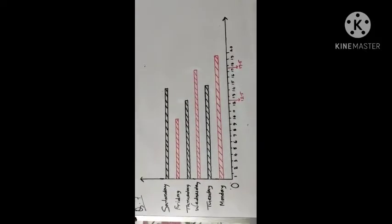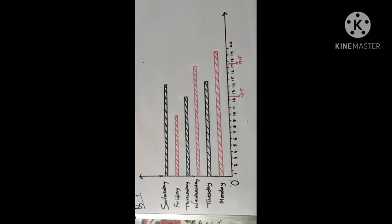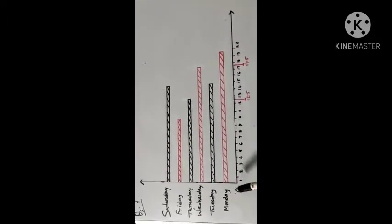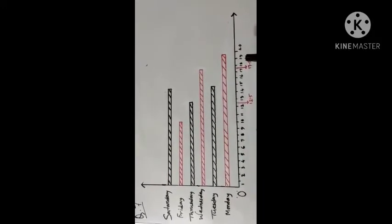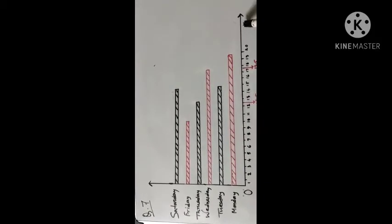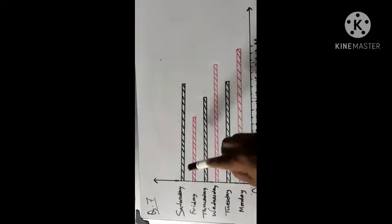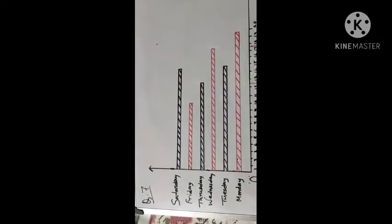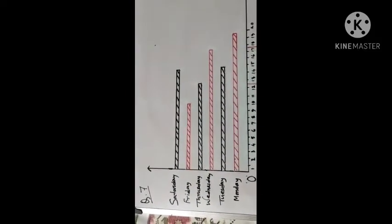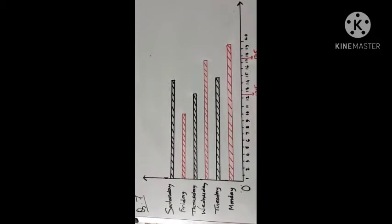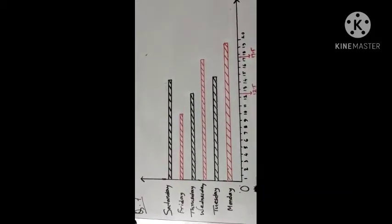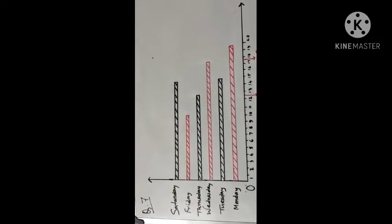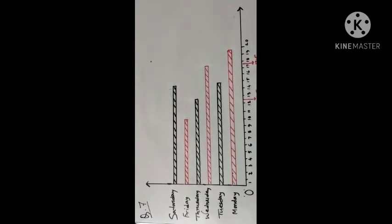At first, we draw two lines — one is horizontal, another vertical. Suppose they intersect at point O. The two lines are perpendicular to each other.